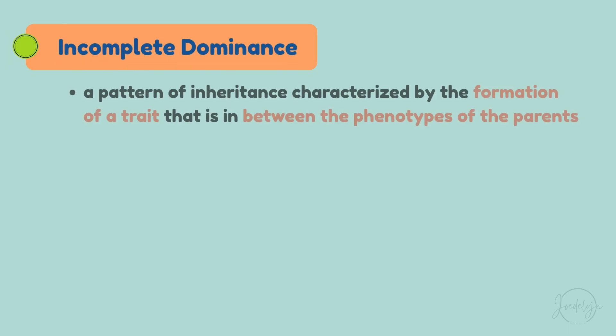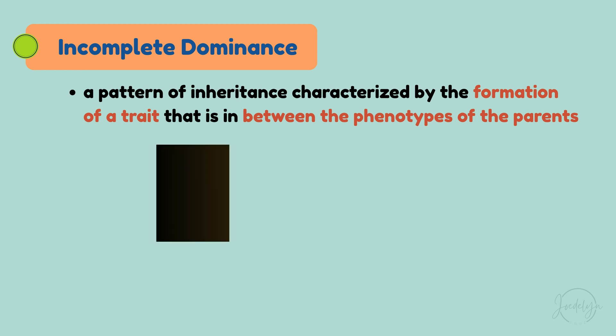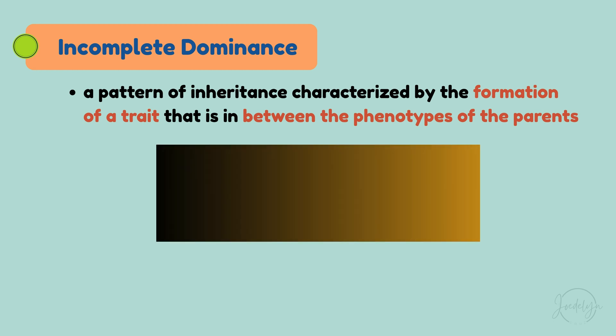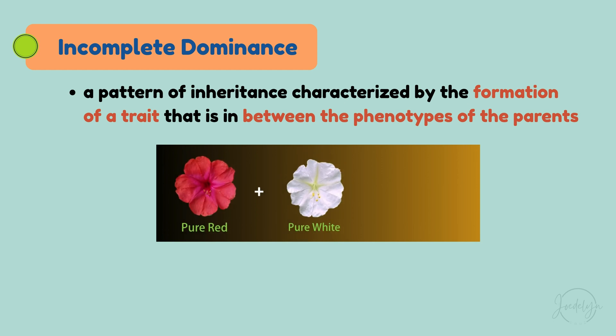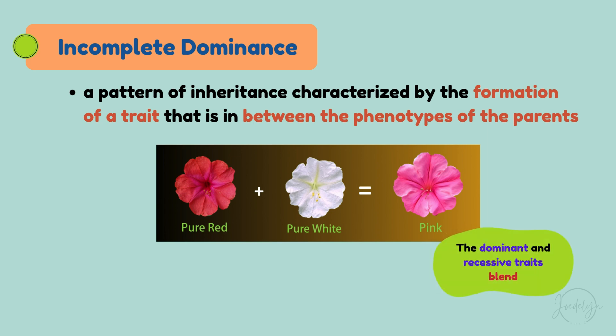Incomplete dominance, a pattern of inheritance characterized by the formation of a trait that is in between the phenotypes of the parents. Imagine this: you cross a pure red flower with a pure white flower, and the result? A pink flower. This is because the dominant and recessive traits blend.